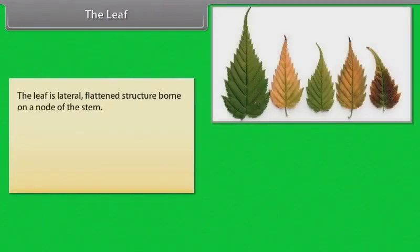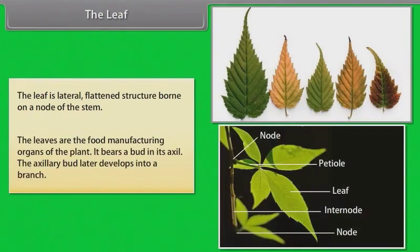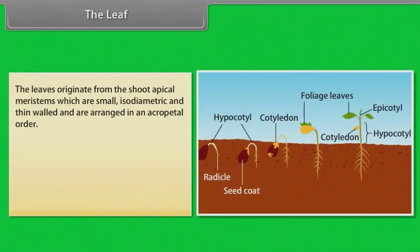The leaf is lateral, flattened structure born on a node of the stem. The leaves are the food manufacturing organs of the plant. It bears a bud in its axle. The axillary bud later develops into a branch. The leaves originate from the shoot apical meristems.